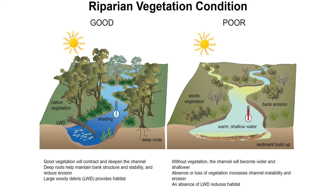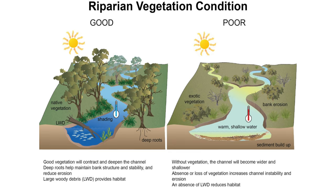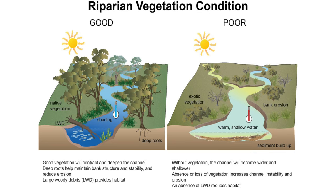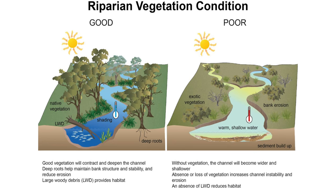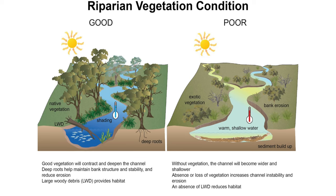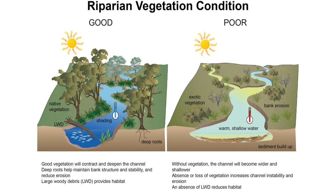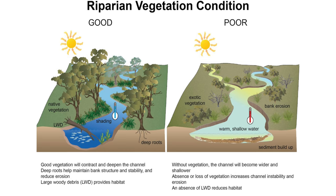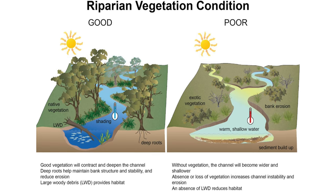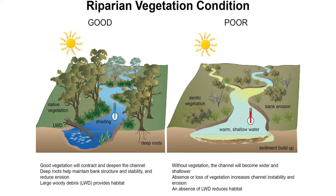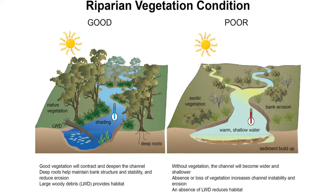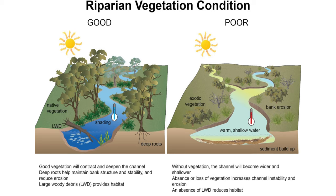You can also see grasses that filter sediment and other pollutants as runoff flows into the river. The image on the right shows that without vegetation and large woody debris, the channel becomes wider and shallower. Banks erode more easily and there's less habitat. Water temperature increases and fewer aquatic species can breed and live in the water. If there's no grass or short grass, that allows pollutants to flow directly into the river.